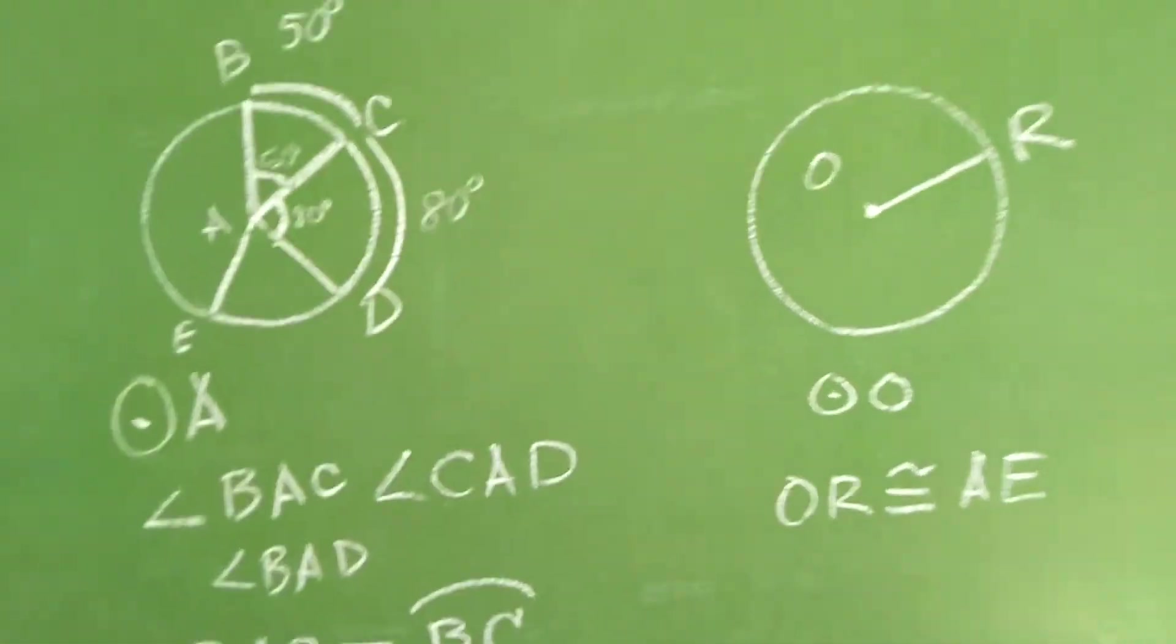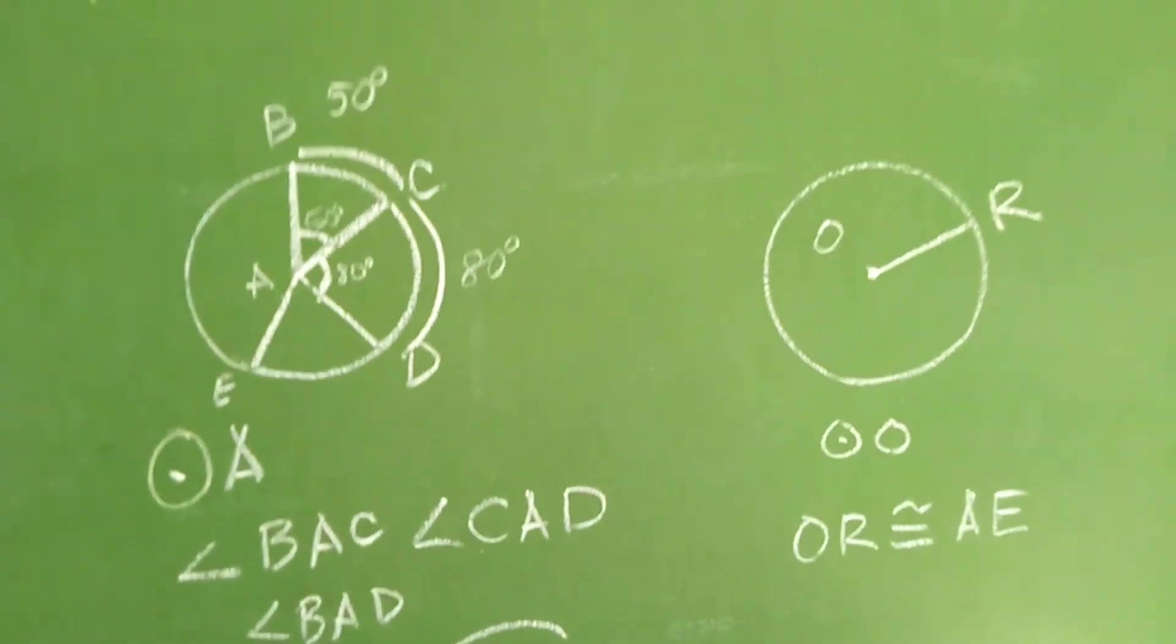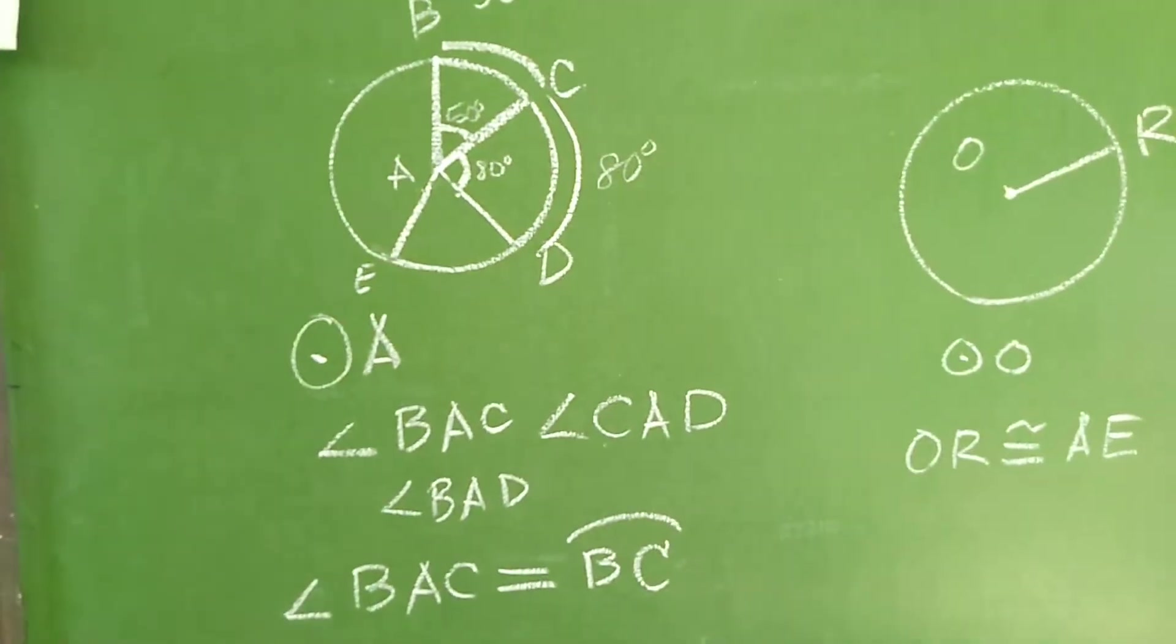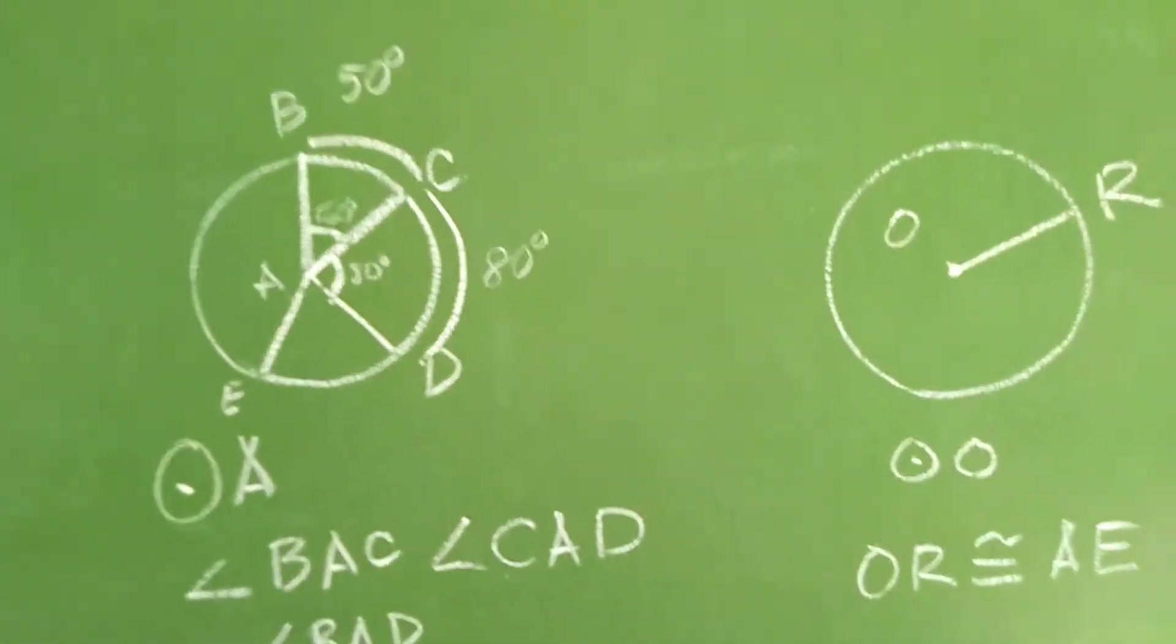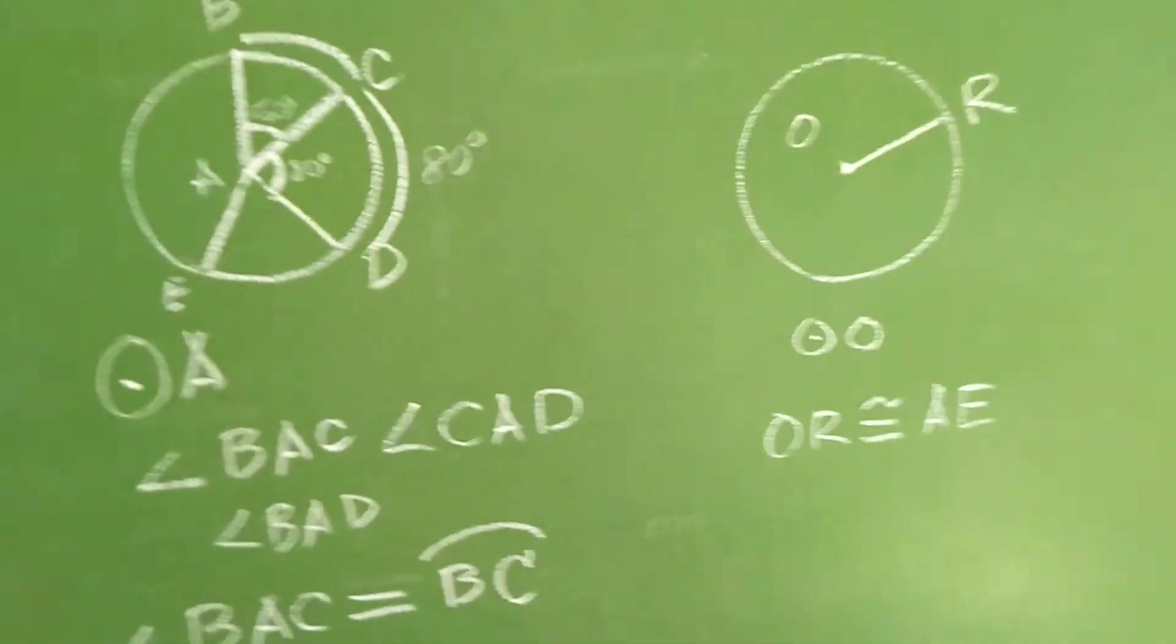Kahit po na hindi masyadong eksakto yung nakikita natin sa mga figures natin, susundan po natin ang sinasabi po dito. Okay? So, OR is congruent to AE. Tandaan nyo mabuti. Meron din po tayong postulate na nasabi dito. Okay? Or isa sa mga definitions, I should say, correct me if I'm mistaken. I stand to be corrected kung mali ang nabanggit ko man doon. Okay?